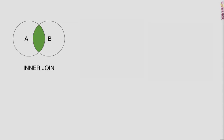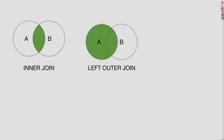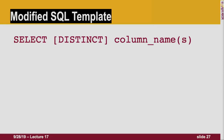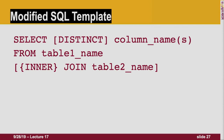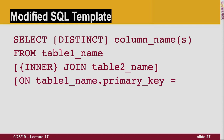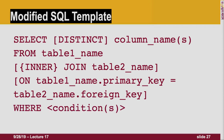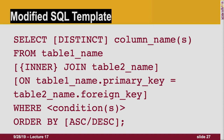Visually: an INNER JOIN returns records only in the intersection of both tables. A LEFT OUTER JOIN returns everything in A even if it's not in B. A RIGHT OUTER JOIN returns everything in B even if it's not in A. We can modify our template: SELECT DISTINCT from a table, do an INNER JOIN on a second table joining on the primary key of the first table equal to the foreign key of the second table, add a WHERE condition, and ORDER BY however you want.